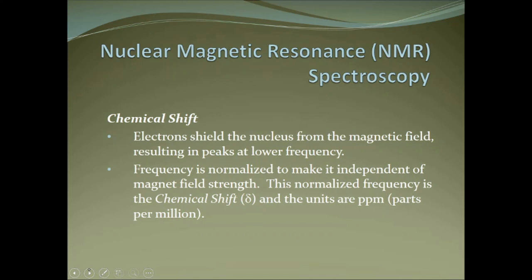The electrons around the nucleus influence the magnetic field and change the frequency slightly. The frequency of resonance for these hydrogens depends on the magnetic field, so to make NMR independent of field strength, we normalize or adjust the frequency. We don't report a frequency in Hertz; we report a modified frequency called chemical shift. That way, it does not matter what the magnetic field strength was. The units are PPM, or parts per million.